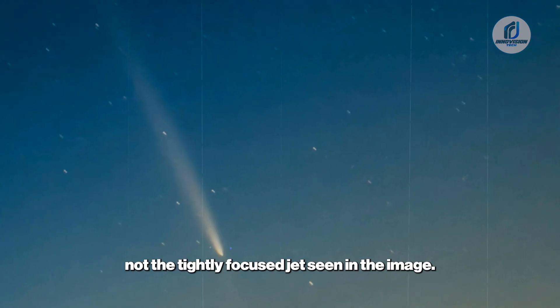On October 20th, Earth was still over 4 degrees away from the orbital plane of 3I Atlas, making a prominent anti-tail highly improbable. More importantly, anti-tails are always broad, diffuse sheets of dust, not the tightly focused jet seen in the image.